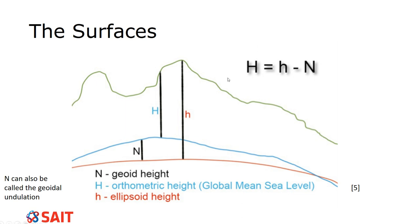They are related this way: big H equals little h minus N. Big H is orthometric height, little h is ellipsoidal height, and N is geoidal undulation. You can see that mathematically it works really well. We'll be looking at something very similar to this when it comes to photogrammetry later in the semester, but this is the original formula to get us started.